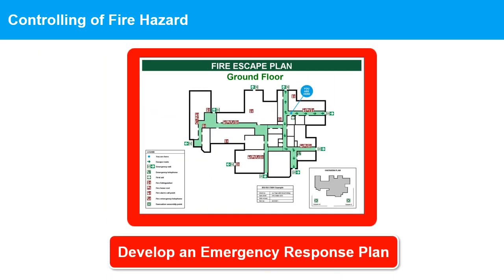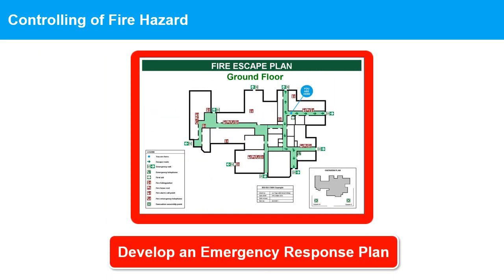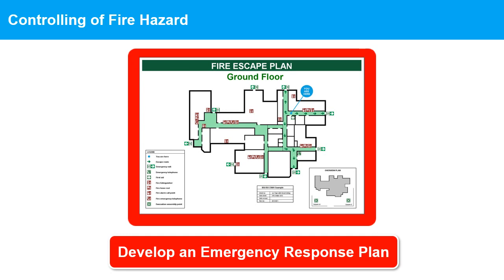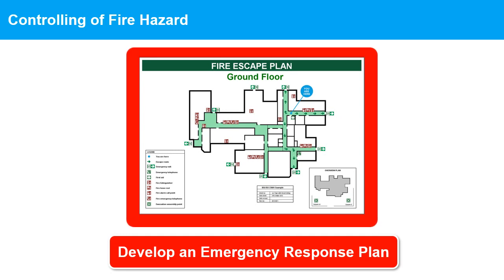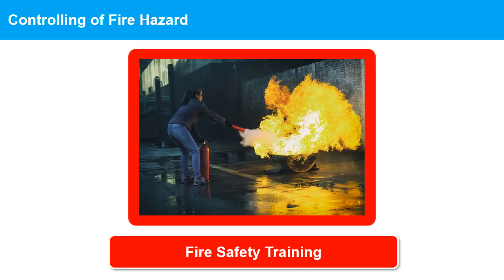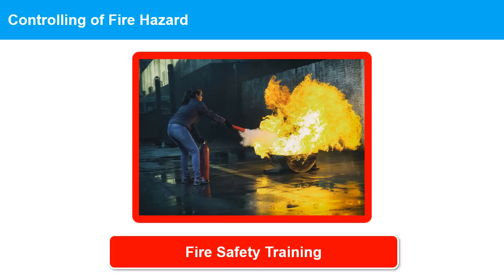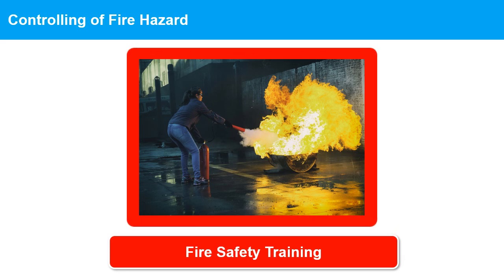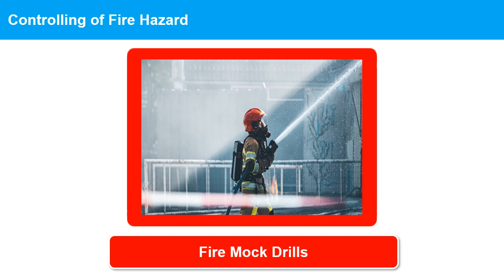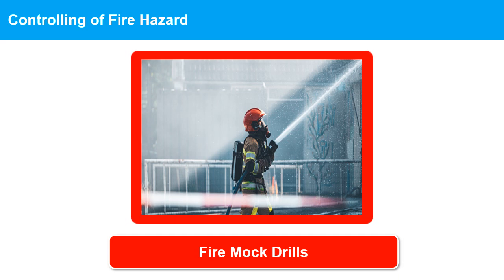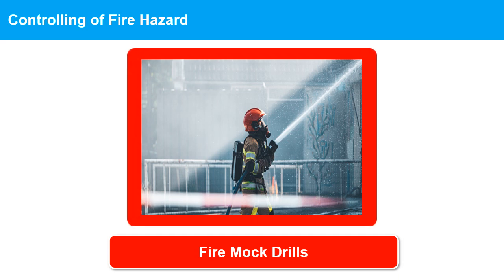11. Develop an emergency response plan: in case of a fire, have an emergency response plan in place, including evacuation routes and procedures. 12. Training: train employees on how to use firefighting equipment, including fire extinguishers and hoses. 13. Fire evacuation mock drill: conduct regular fire drills to ensure that employees know what to do in case of a fire.